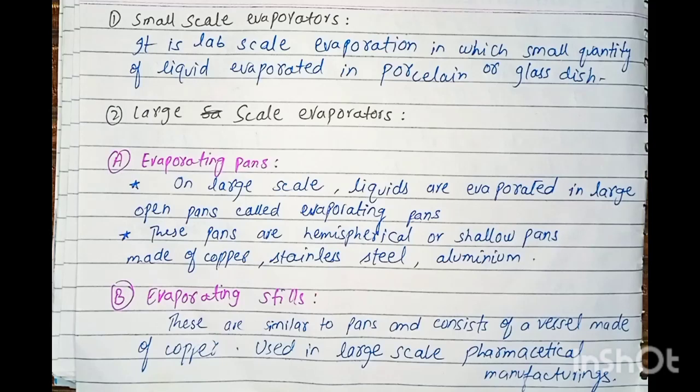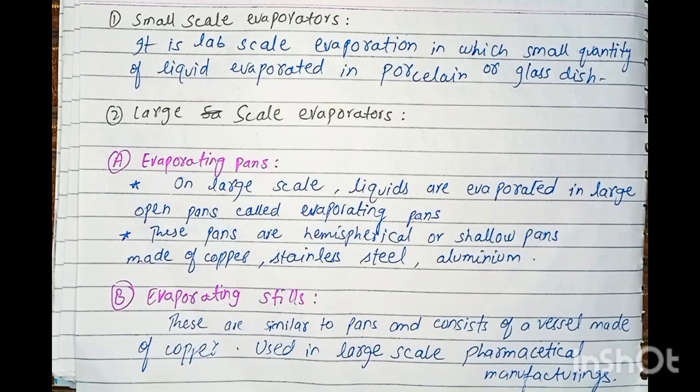In large-scale evaporators, evaporating pans and evaporating stills are used. Pans are very small. In large-scale, liquids are evaporated in the evaporating large open pans. These pans are hemispherical and shallow. They are made up of copper, stainless steel, and aluminum.